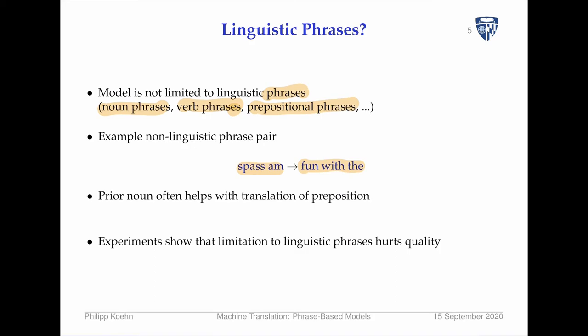One idea was: why does it learn all these strange phrases? Maybe we should just learn only linguistic phrases. We could limit it to linguistic phrases, but we found out that actually hurts quality. Even features that promote linguistic phrases don't seem to have any benefit at all.